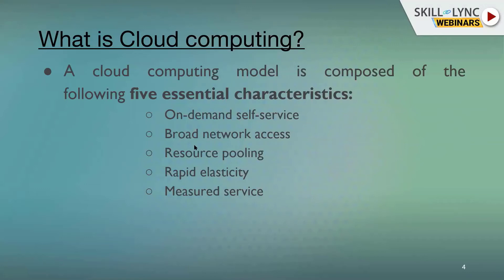A broad network access, then resource pooling. Resource pooling is like a multi-tenant model — it's irrespective of location and dependency. Next is rapid elasticity and measured services.